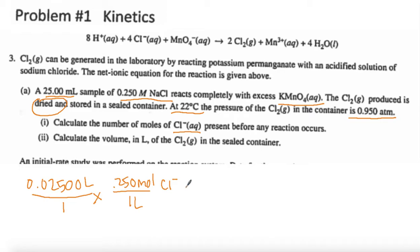So we have 0.02500 liters as our sample. I turned it into liters by dividing by 1,000. And then I have 0.250 mol per 1 liter of the Cl- ion. So when we calculate this out for part (i), I get 6.25 times 10 to the -3 mole of Cl-.